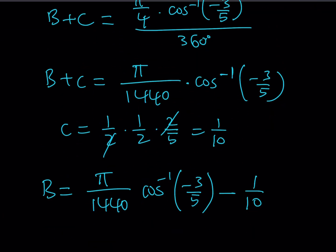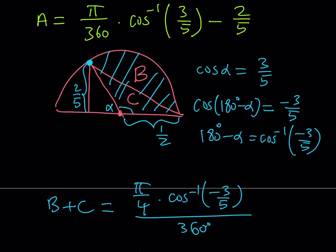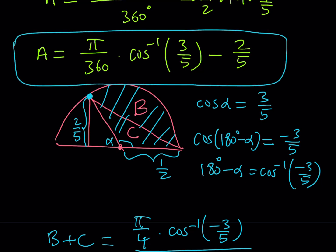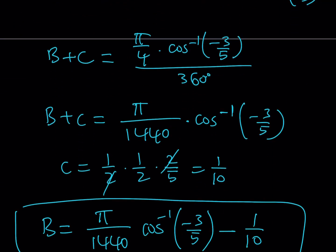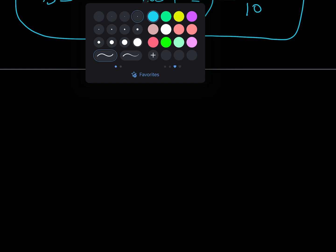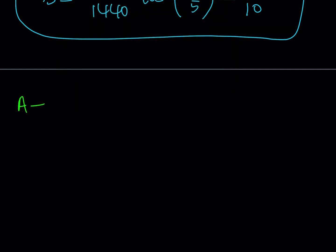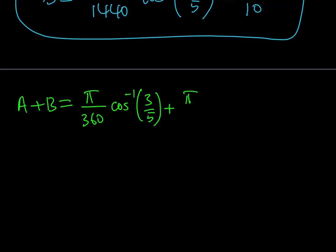We found A and B. Adding them for the shaded area: A + B = (π/360)·cos⁻¹(3/5) + (π/1440)·cos⁻¹(−3/5) − 2/5 − 1/10. Simplifying the constants: 2/5 = 4/10 and 1/10, so together they give −5/10 = −1/2.